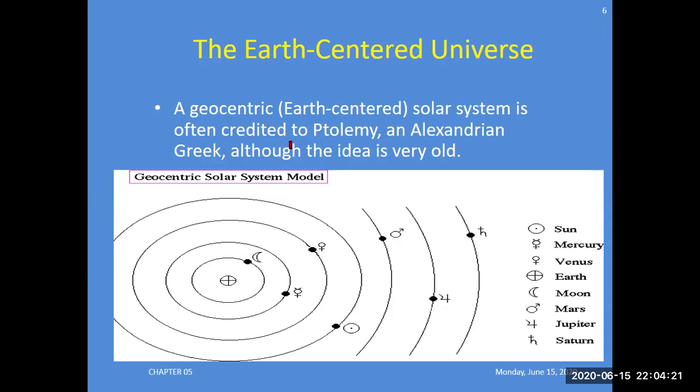Here is the geocentric, Earth-centered solar system, often credited to Ptolemy, an Alexandrian Greek. The idea is very old. This was one of the models: geocentric solar system with the Sun, then Mercury, Venus, Earth, Moon, Mars, Jupiter, and Saturn. These are the different types of early stage theories about the solar system model. This was the position of Earth at the center.